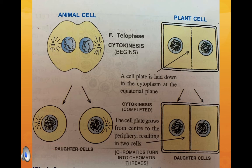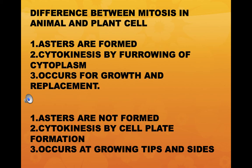There are differences between mitosis in animal and plant cells. Asters are formed only in animal cells; plant cells do not form asters because they have no centrosomes. Cytokinesis in animal cells occurs by furrowing of the cytoplasm or cleavage formation, whereas in plants it occurs by cell plate formation. In animal cells, mitosis is mainly concerned with growth and replacement and occurs in most tissues throughout the body, whereas in plants it occurs at growing tips for lengthening and at sites for increase in thickness or girth.